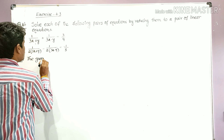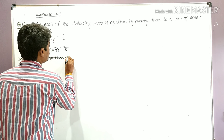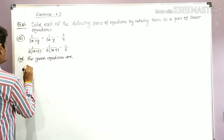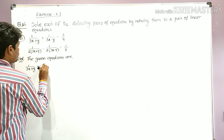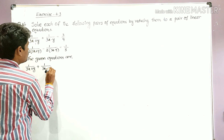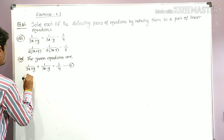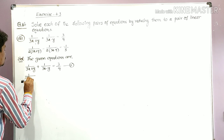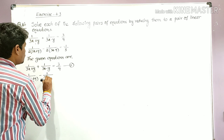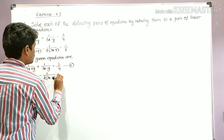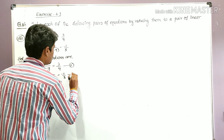Let us write the given equations. The first equation is: 1/(3x + y) + 1/(3x − y) = 3/4. Let this be equation number 1. The second equation is: 1/[2(3x + y)] − 1/[2(3x − y)] = −1/8. Let this be equation number 2.